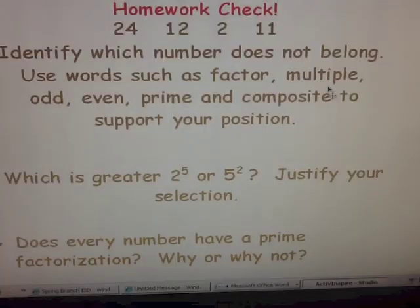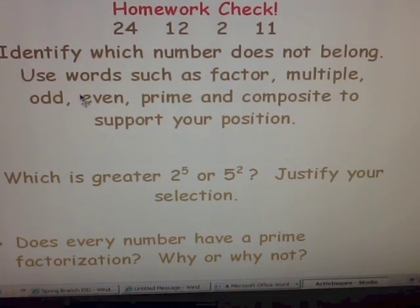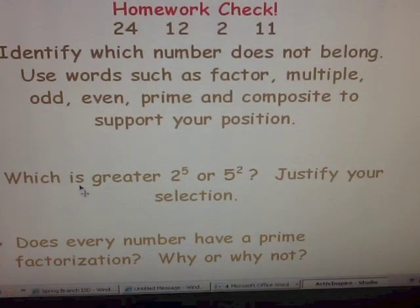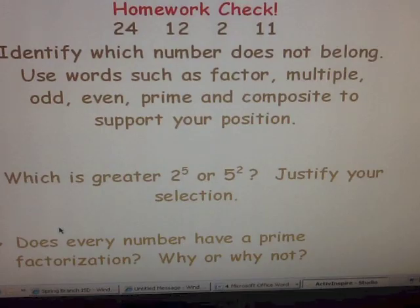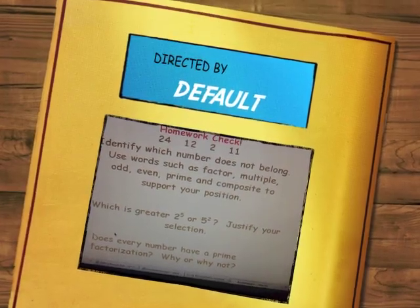Here is your homework for tonight. First, identify which number does not belong in the data set: twenty-four, twelve, two, and eleven. Write an explanation using words such as factor, multiple, odd, even, prime, and composite to support your position. Second, which is greater: two to the fifth power or five squared? Justify your selection. Third, does every number have a prime factorization? Why or why not? Don't give just a yes or no — explain your reasoning. We want to see you think on paper.